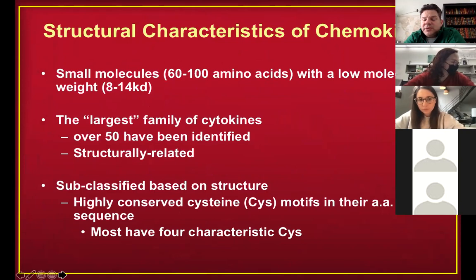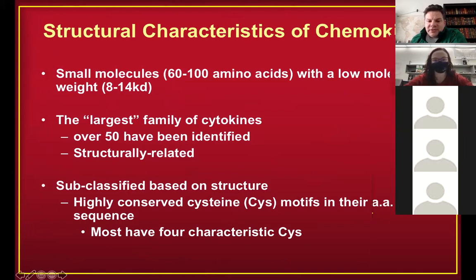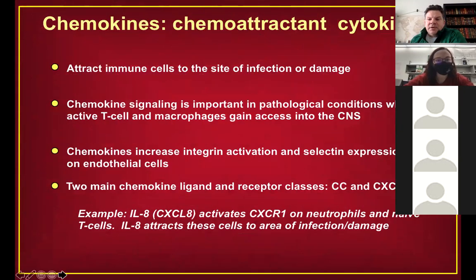Chemokines are small molecules, about 60 to 100 amino acids, low molecular weight, 8 to 14 kilodaltons. They're really the largest family of cytokines. They're structurally related and conserved with cysteine residues as part of their amino acid sequence. There are basically four characteristic cysteine sequence patterns. Chemokines attract cells in the context of infection and injury, and are released by immune cells but also by other cells like astrocytes.